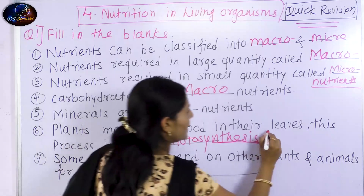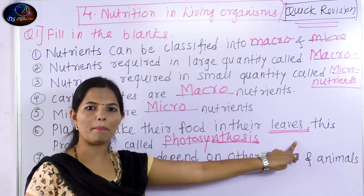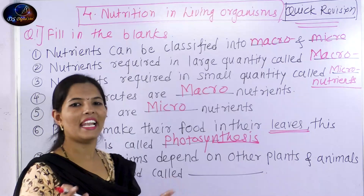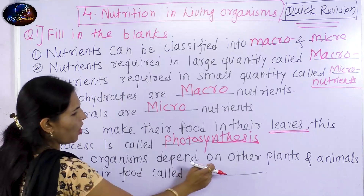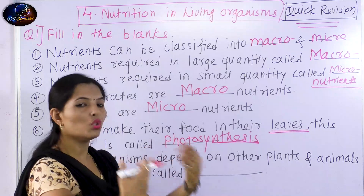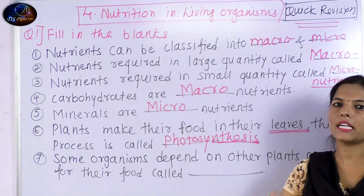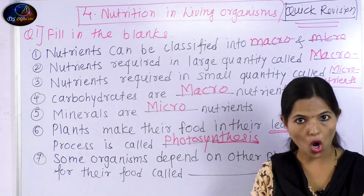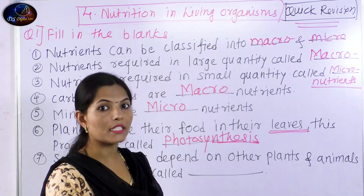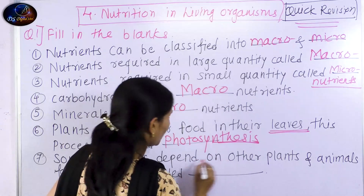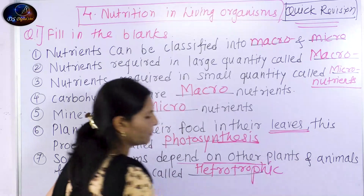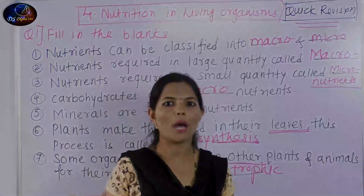Leaves are called the kitchen of the plant. Plants make their food in their leaves — this process is called photosynthesis. Some organisms depend on other plants and animals for their food; these are called heterotrophs. Auto means self-nourishment, while hetero means depending on others. So organisms that depend on others for food are called heterotrophs.